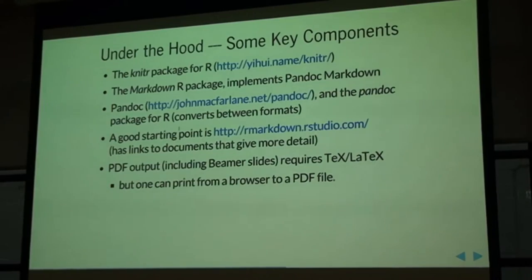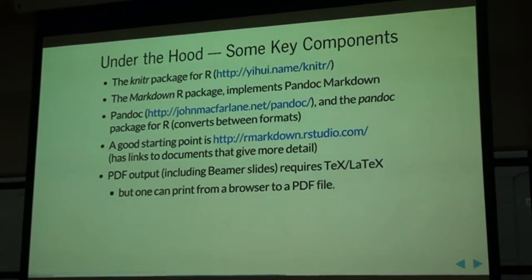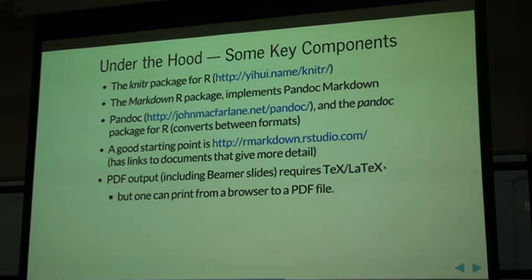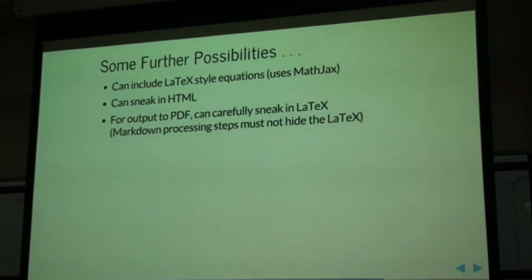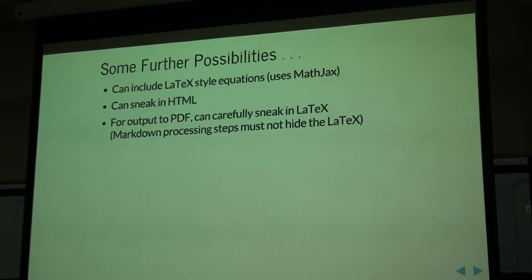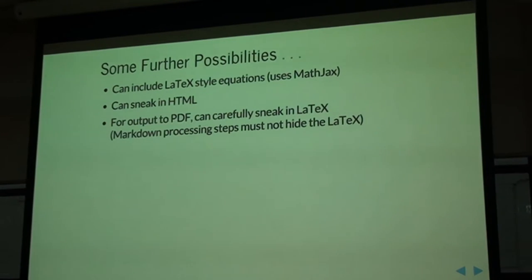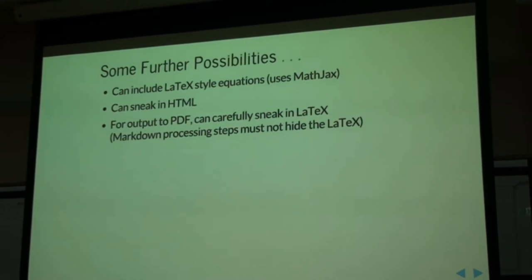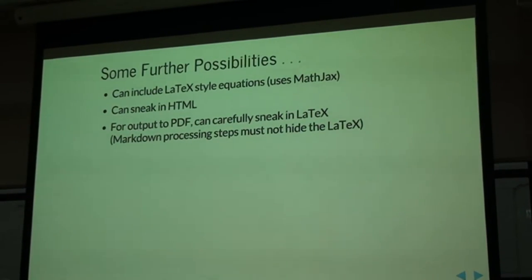A good starting point is this document, which has links to documents that give more detail. If you want PDF output, as I said, you must have a TeX or LaTeX installation. Of course you can print from a browser to a PDF file. Some further possibilities: you can include LaTeX-style equations. This uses something called MathJax — I guess that's another thing sitting there under the hood. You can sneak in HTML. And actually, if you're wanting output to PDF, you can carefully sneak in LaTeX, but the Markdown processing steps must not hide the LaTeX, so that's why I'm saying it has to be done carefully.